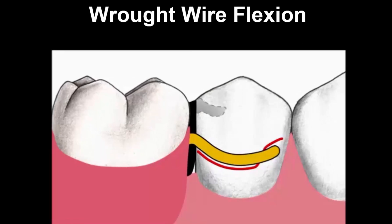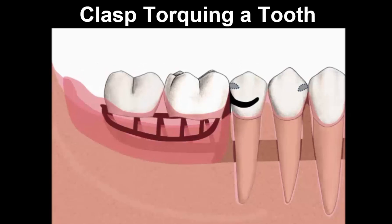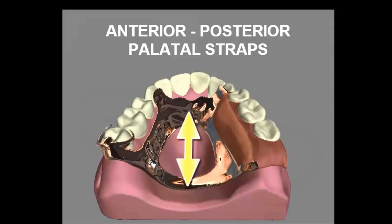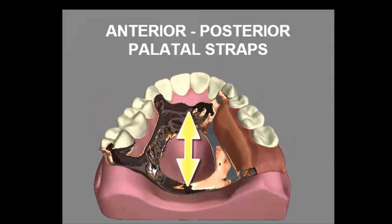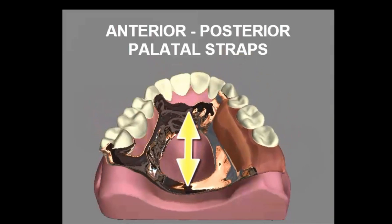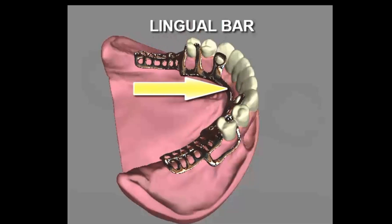A wrought wire clasp can flex and therefore dissipate some of the stress. If there were bone resorption present and the base did not fit, you can see the effect of torquing. Different major connectors are demonstrated here.